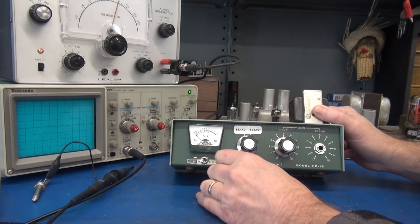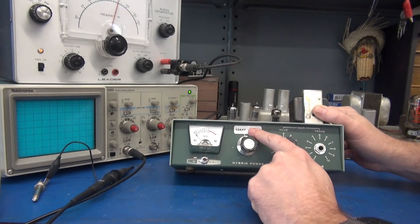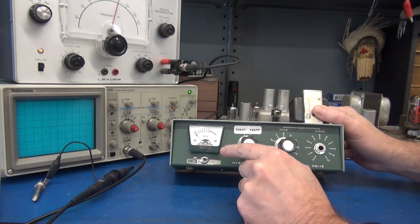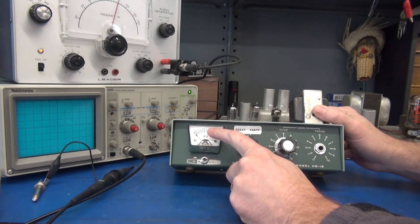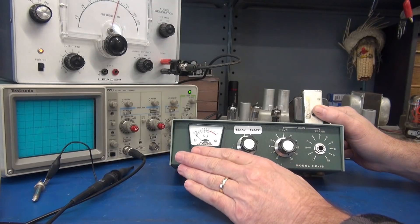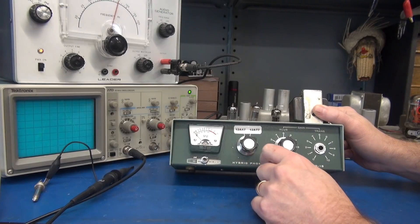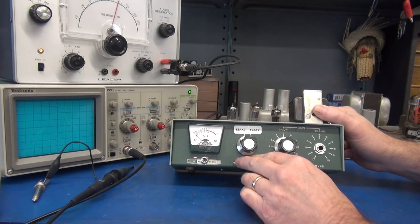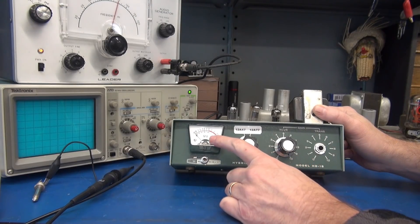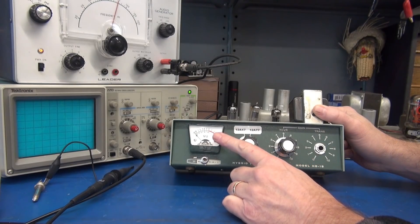So let's say we're testing a 12AX7. The bogey is zero on the meter, which indicates approximately 1 milliamp of current. If I go over to the 12AT7, there's different resistors that switch in to bias that tube and you should get about the same level, zero.